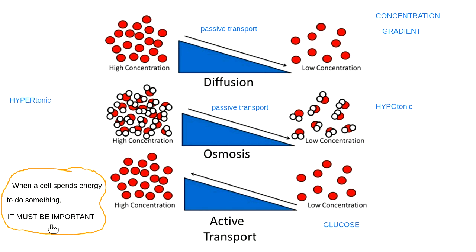Think of it like money — when you spend money, theoretically you're spending it on something important. Cells are very smart about how they spend their energy money. When a cell spends energy to do something, it must be important. If a cell is willing to spend energy on it, they must need it to survive.